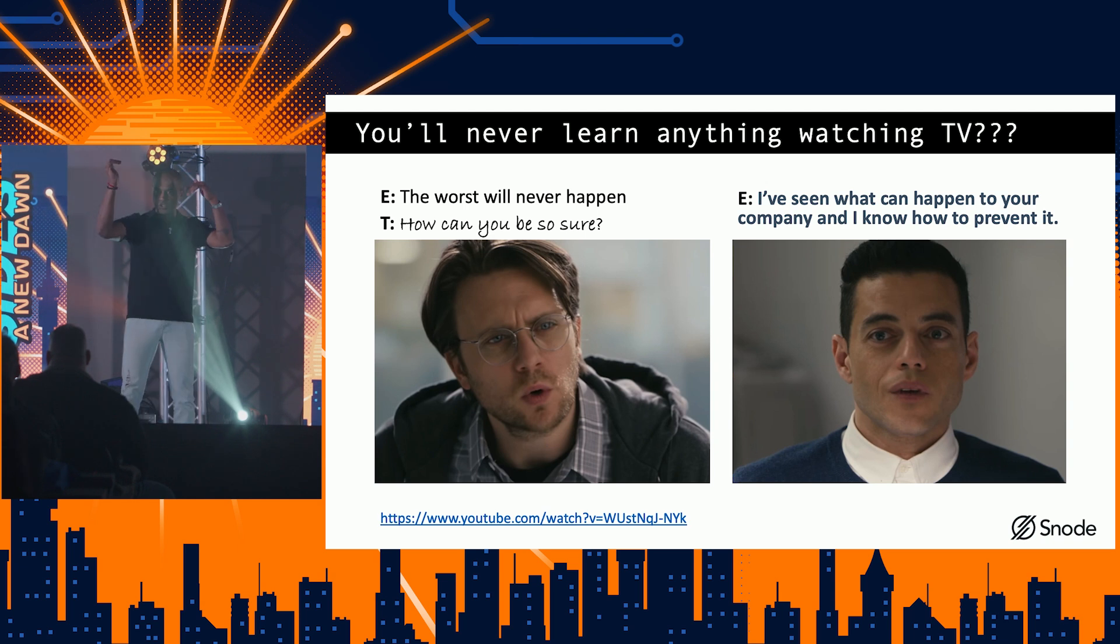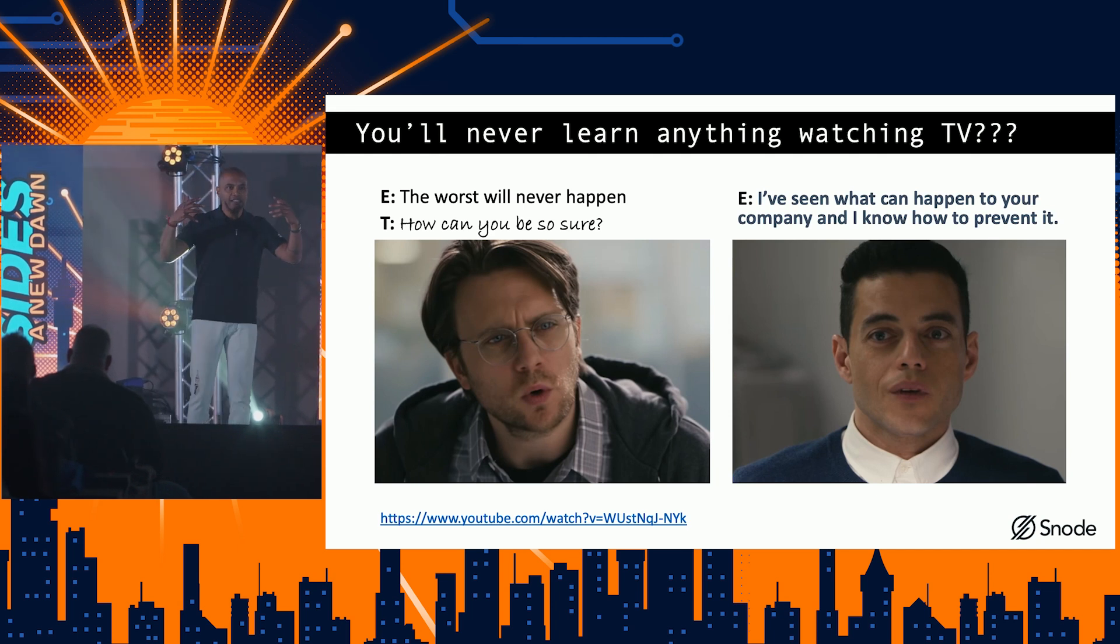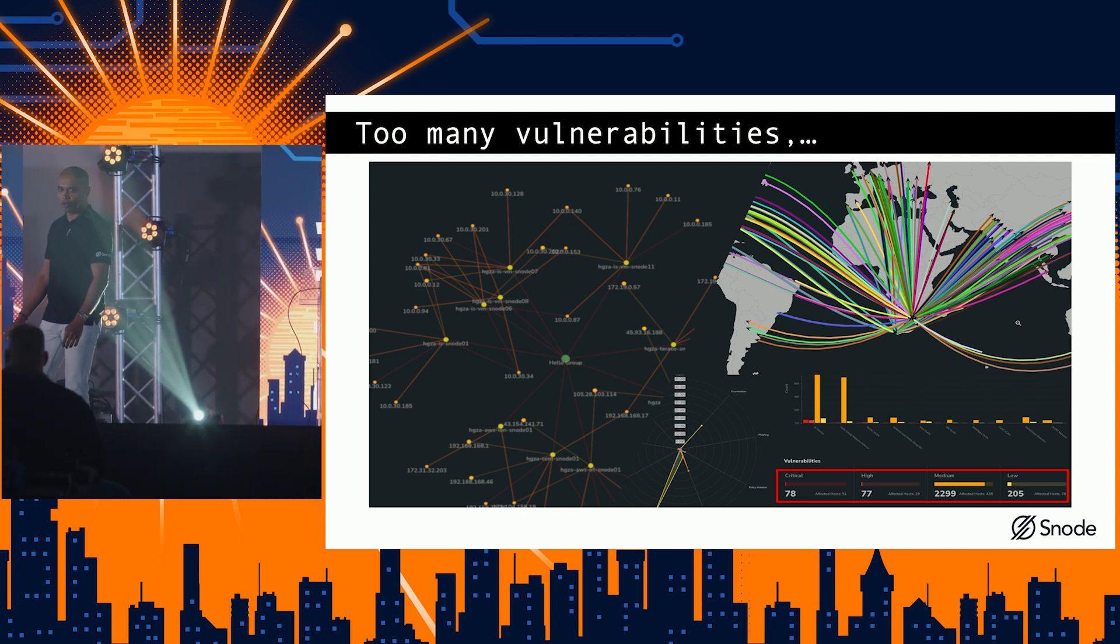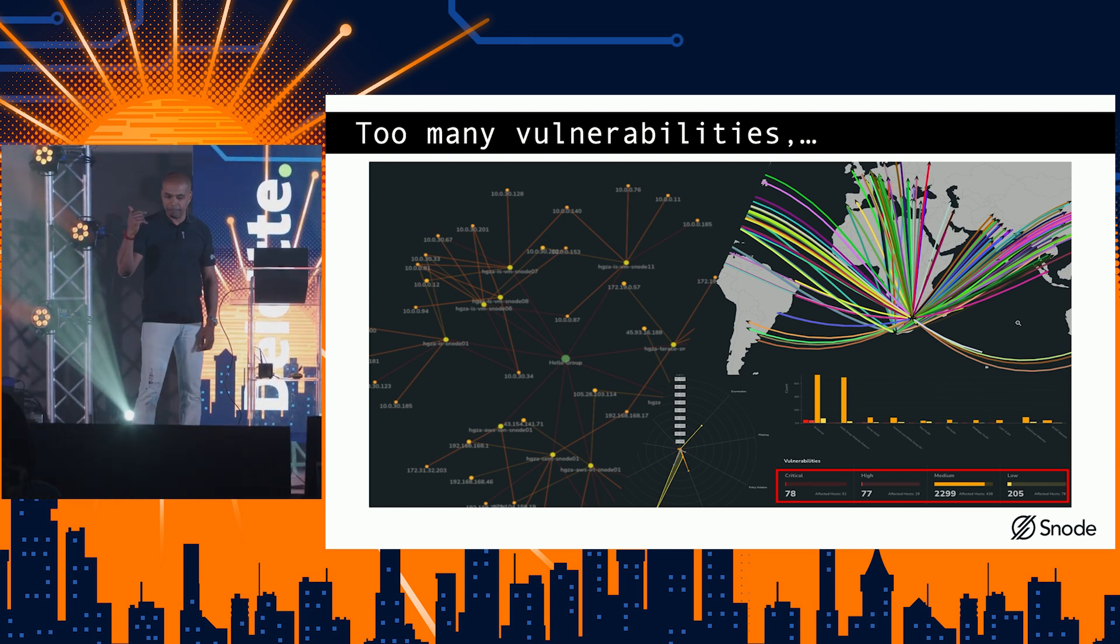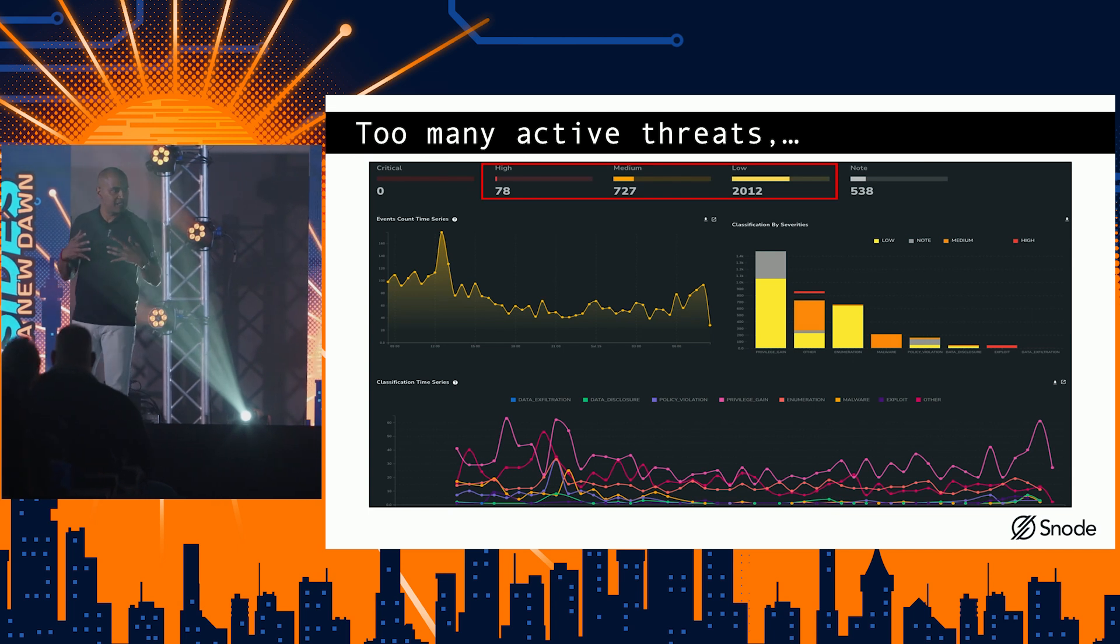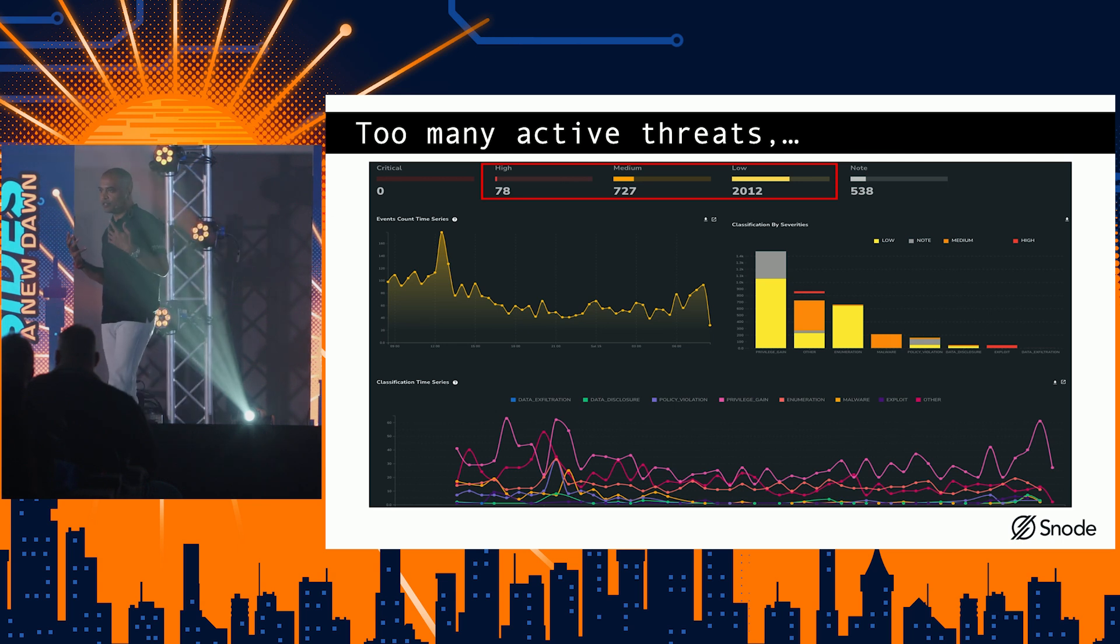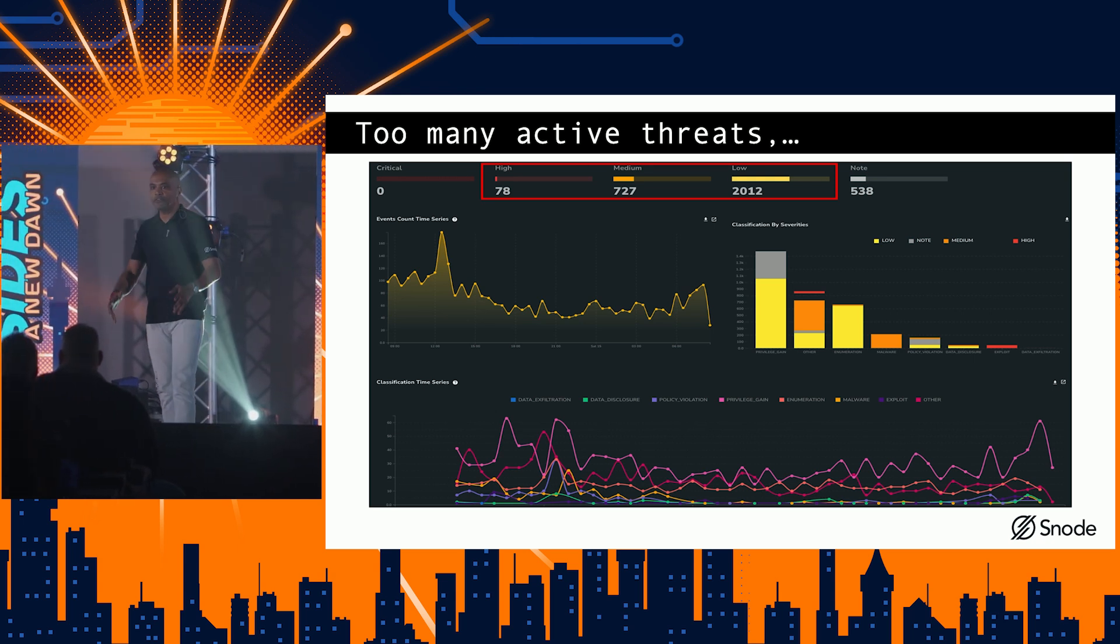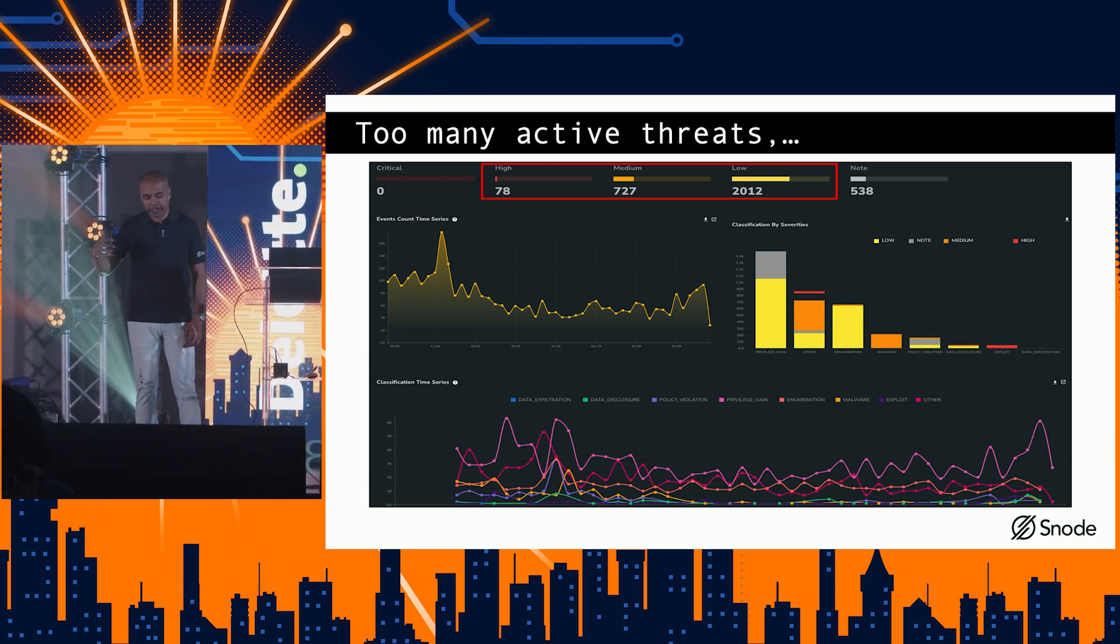So I was watching Mr. Robot. And there's this episode where Elliot is essentially in this alternate universe and he's the CEO of Allsafe, and he's speaking to Tyrell, the dude with the really hot wife. But what he says is, basically, I've seen you get hacked. I've seen the worst that can happen, and I know how to stop it. And the guy's like, what do you mean? Did I get hacked? And he's like, no, I ran some simulations.